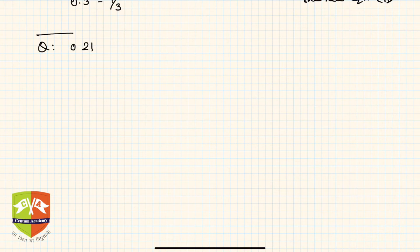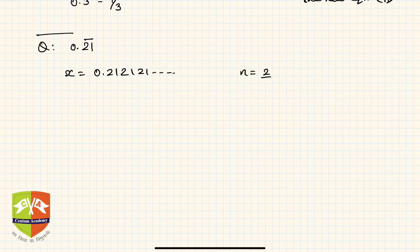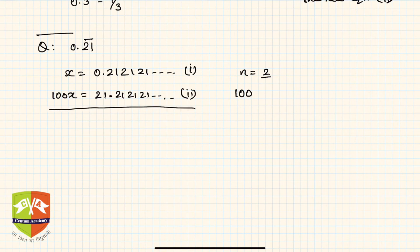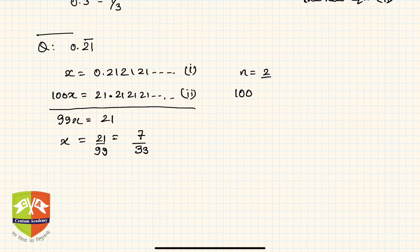Let's take another example to make it clearer. Say we have 0.21 bar — a pure non-terminating recurring decimal. Let x equal 0.212121... and so on. Here n equals 2 because two digits are repeating after the decimal. So the multiplication factor is 100 — that is 1 followed by 2 zeros. Multiplying gives 100x equals 21.2121..., which is equation 2. Subtracting equation 1 from equation 2: 99x equals 21, so x equals 21 by 99, which in reduced form is 7 upon 33.